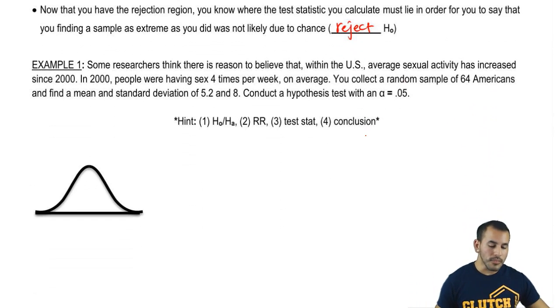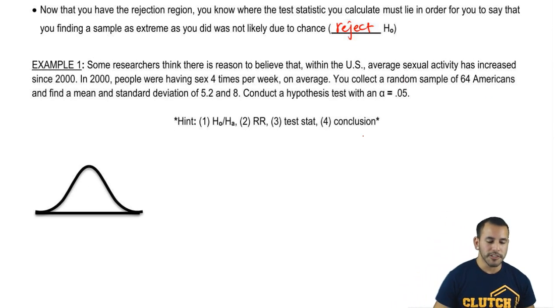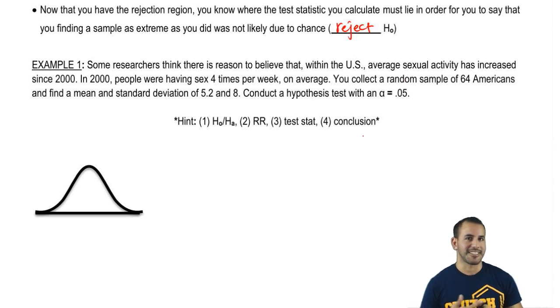So now let's go ahead and do a quick problem. Some researchers think that there's reason to believe that within the United States average sexual activity has increased since 2000. In 2000 people were having sex four times a week on average. You collect a random sample of 64 Americans and find a mean and standard deviation of 5.2 and 8. Conduct a hypothesis test using an alpha of 0.05.